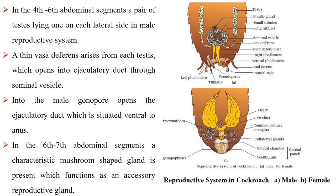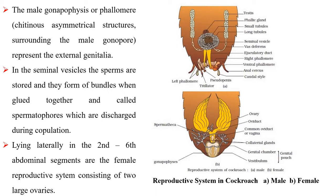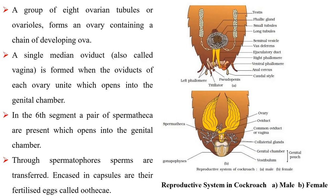A thin vasa deferentia arises from each testis, which opens into the ejaculatory duct through the seminal vesicle. The ejaculatory duct opens into the male gonopore, situated ventral to the anus. In the sixth to seventh abdominal segments, a characteristic mushroom-shaped gland is present which functions as an accessory reproductive gland. The male gonopophyses or phallomere represent the external genitalia. The sperms are stored in the seminal vesicles and form bundles when glued together, called spermatophores, which are discharged during copulation.